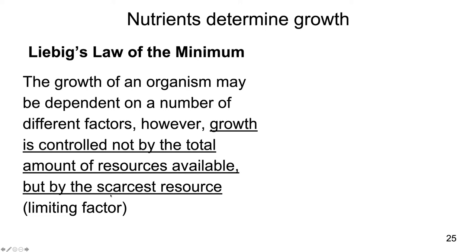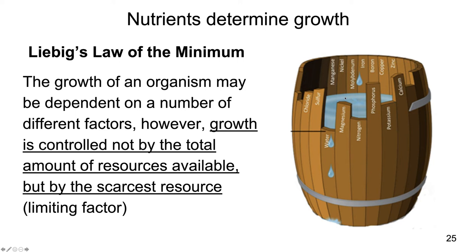A nice metaphor to think about this is a barrel filled with water, where water represents the growth of an organism, and each of the little planks that makes up the barrel represents a different nutrient. The water can only rise as high as the lowest plank — the limiting nutrient. In this case, water is the limiting factor, and the growth of the organism can only fill up as high as that lowest amount before it dumps over.